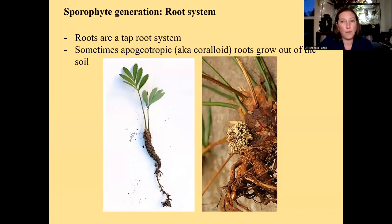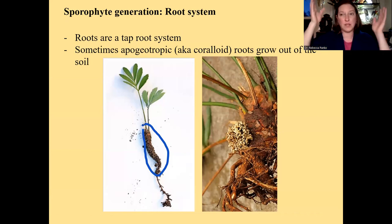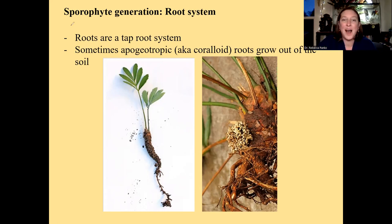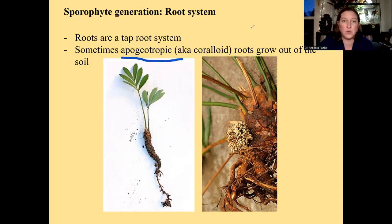Roots are a taproot system. A taproot system means the root grows kind of like a carrot — a carrot is also an example of a taproot. It grows basically straight down and doesn't branch out much. Sometimes certain species have a very weird type of root called apogeotropic, or you might see the word coraloid — they mean the same thing. These roots actually grow out of the soil rather than into the soil, which is weird. Why would something do that?